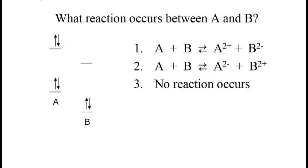In this case, the electrons in the upper orbital on A see an open space in the empty orbital on B, and will spontaneously jump from A to B, so we can rule out answer number 3.